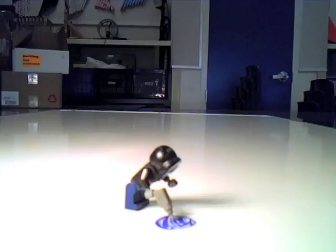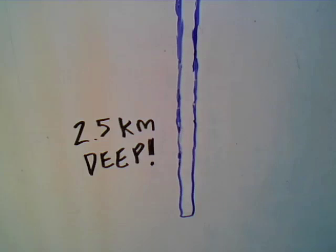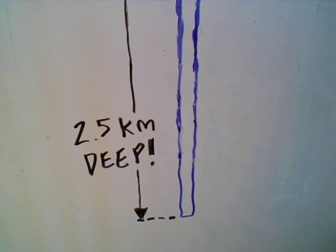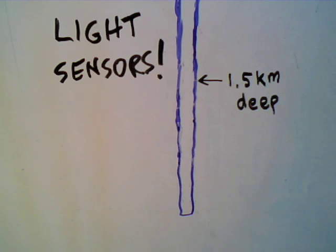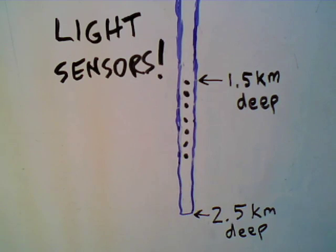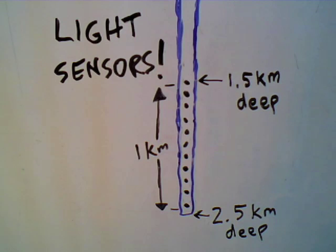Alright, now we're going to drill down into the ice. And we're going to drill down to a total depth of about 2.5 kilometers. That's about 1.5 miles. Next, we're going to place a string of light sensors. Starting 1.5 kilometers down and extending all the way to the bottom of our hole, a full kilometer. And in this string, we're going to place a total of 60 sensors.